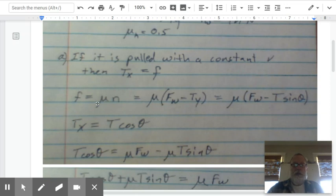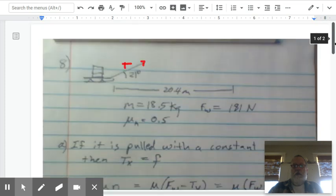So what I'm going to do is come up with an expression for friction and for the horizontal component of the tension. And so we know friction equals mu times the normal force. And the normal force, because the rope is pulled at an angle, there is a Ty component here.